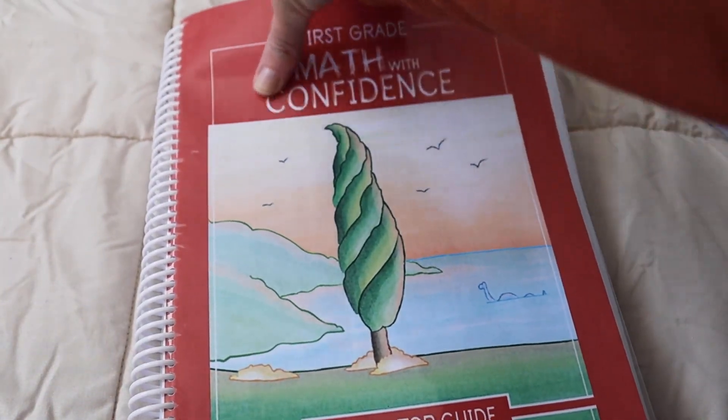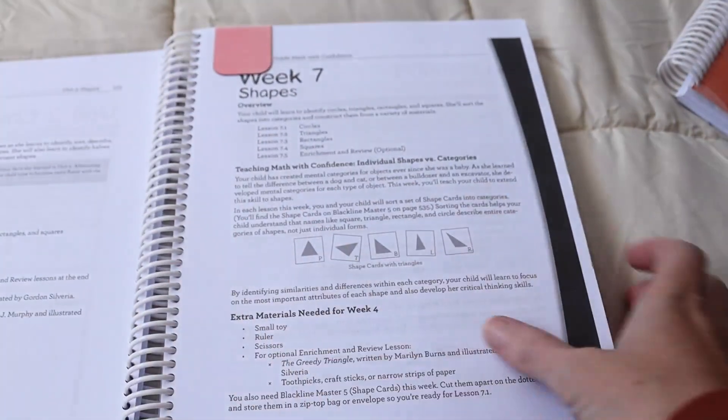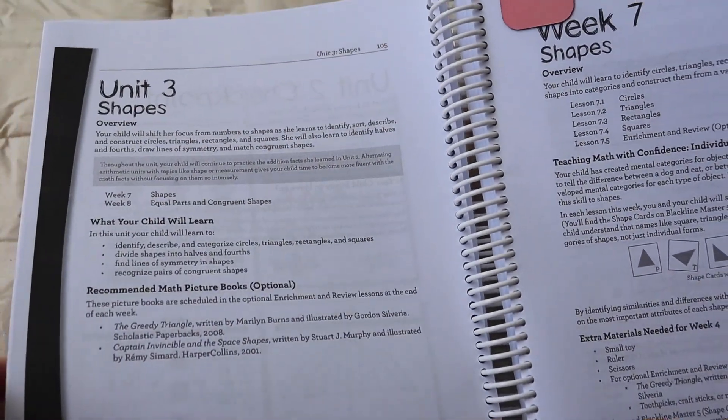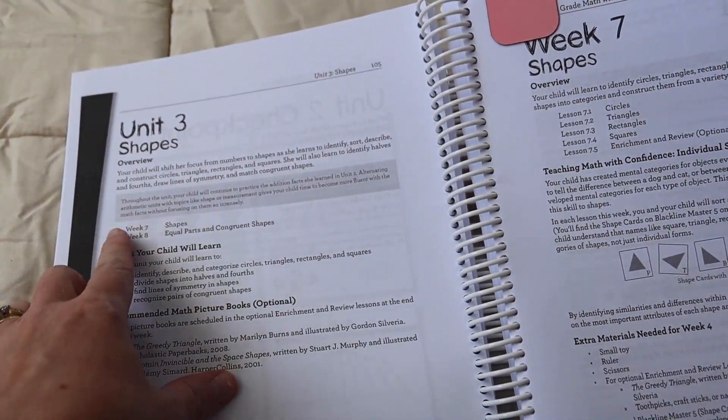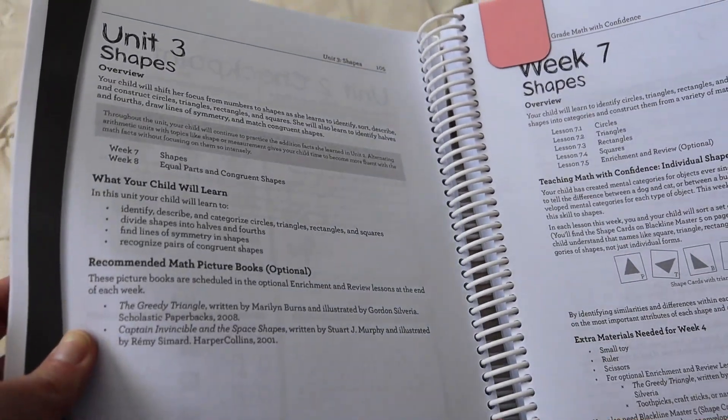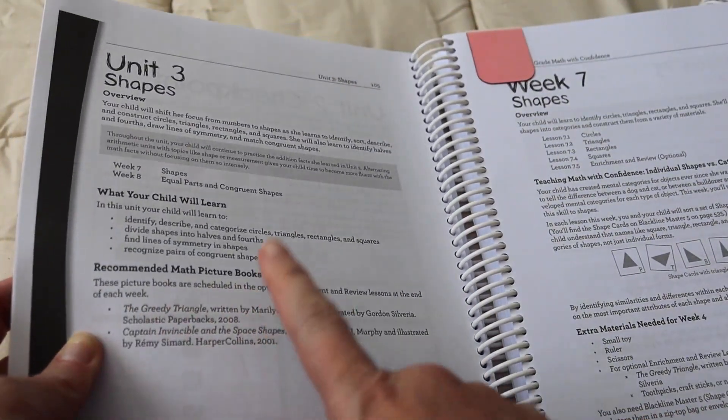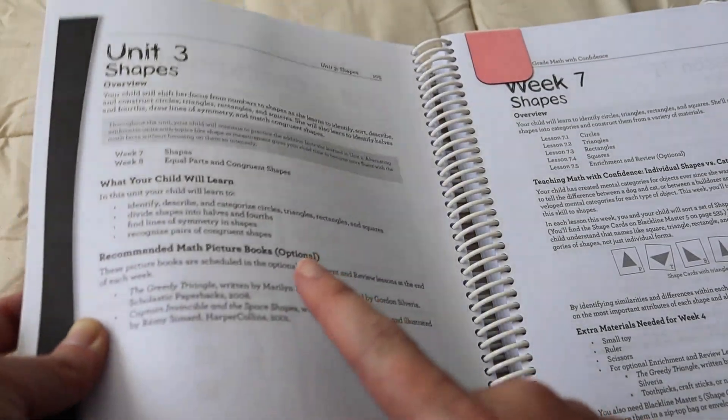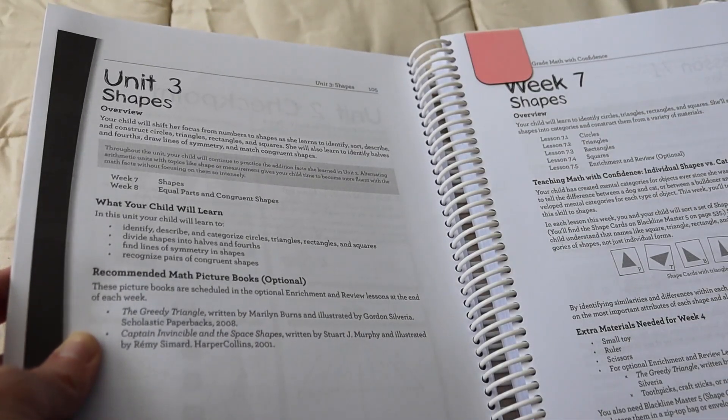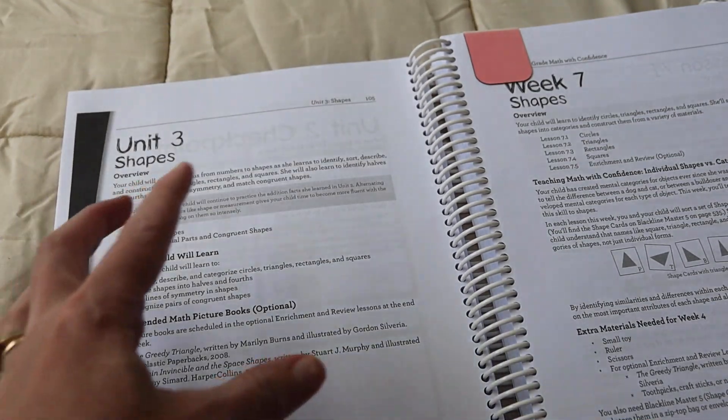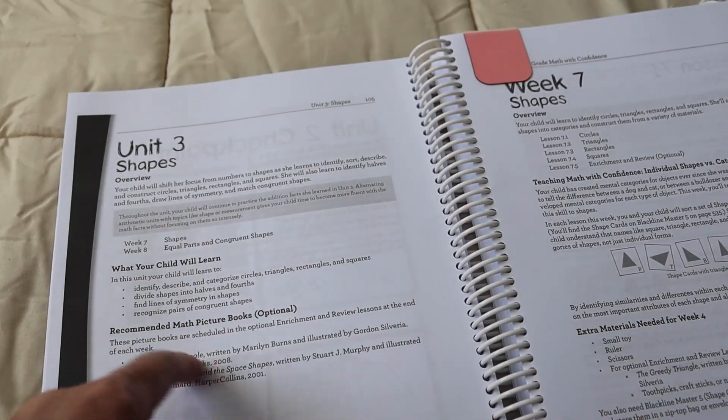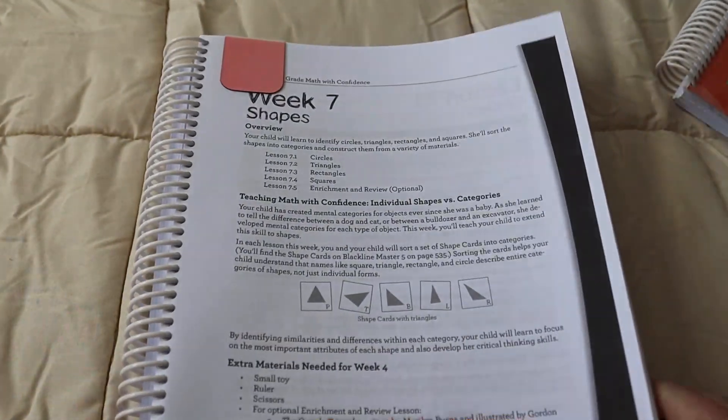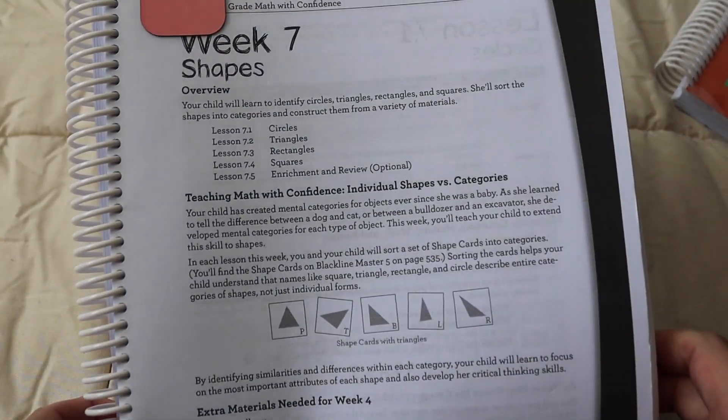I'm just going to flip to wherever we are in here. We're up to week seven, but also up to unit three. So each unit has a specific overview, and it's going to be talking about shapes, this unit, what your child will learn, recommended picture books, which we've not done this, but I do know that Rachel from Seven and All kind of pulls from some of these. So go and check out her channel. I think she's using the kindergarten level at the moment. She might be on to first grade. I'm not sure. But go check that out because she talks more about that.